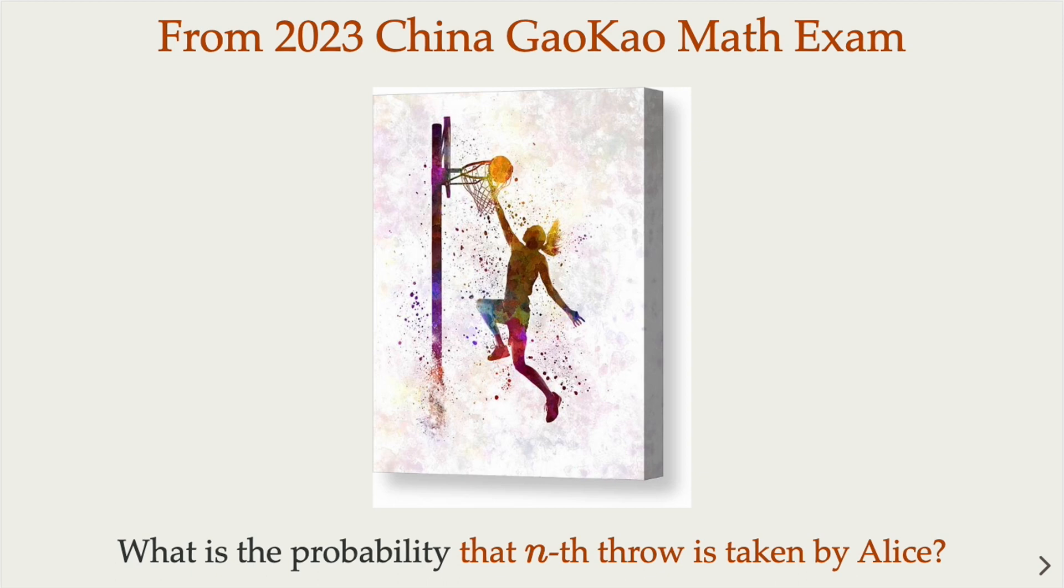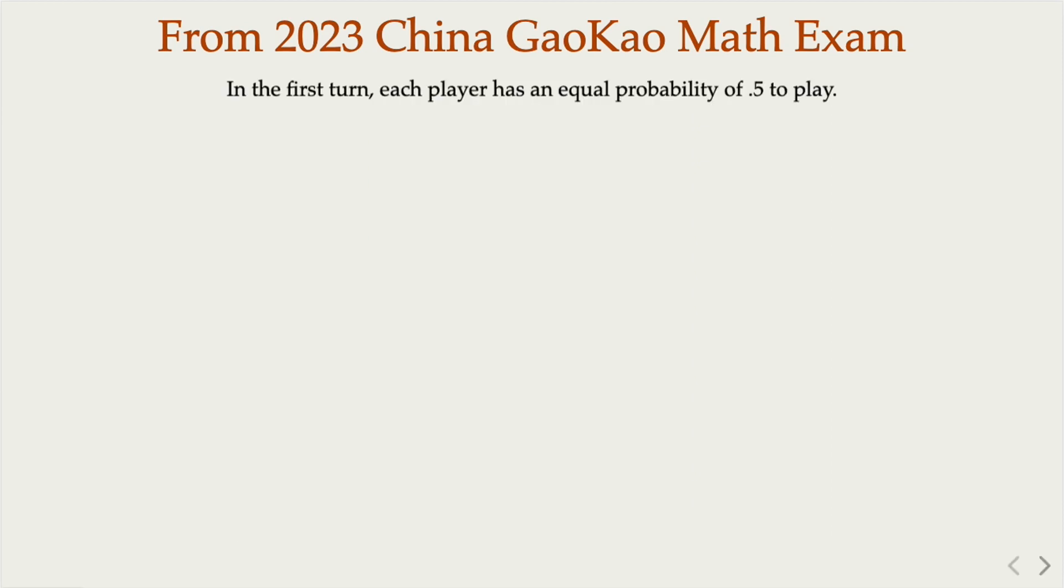Here is a probability problem regarding basketball practice. We have two players, Alice and Bob, taking turns throwing a basketball. The game follows these rules: In the first turn, each player has an equal probability, that is half each, to play. The player who successfully makes a basket gets to continue playing, while the other player takes the next turn.